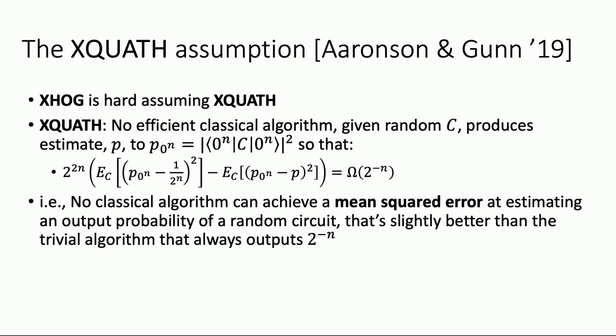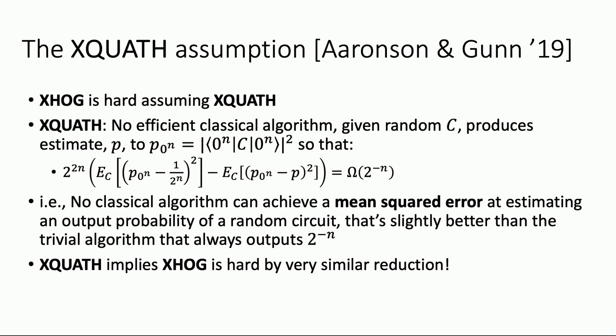So: no classical algorithm can achieve a mean squared error at estimating an output probability of a random circuit that's slightly better than the trivial algorithm that always outputs two to the minus N. XQuath implies XHog, and we sketched how the reduction works. It's by contrapositive: we assume there's an algorithm for XHog — a classical algorithm that given a quantum circuit outputs outcomes two thirds of which are heavy — and we claim the all-zero outcome is heavy if it's on that list; otherwise, we flip a coin and output heavy or light.